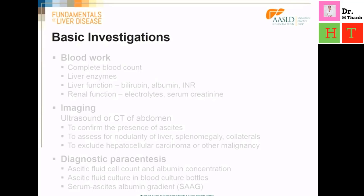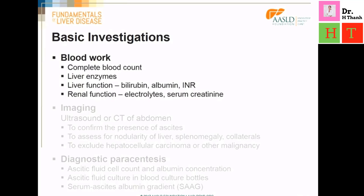Here is a list of the basic investigations needed for a patient who presents with cirrhosis and ascites. We need to do some basic blood work, including a complete blood count, liver enzymes, liver function, and renal function. A complete blood count is required because these patients are frequently anemic. We should also look for an elevated white cell count, which could indicate the presence of infection. A low platelet count would suggest the presence of hypersplenism.